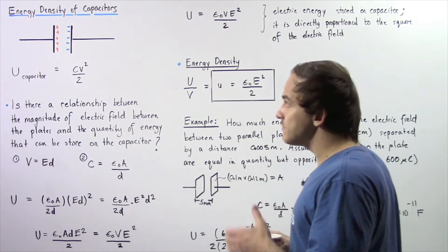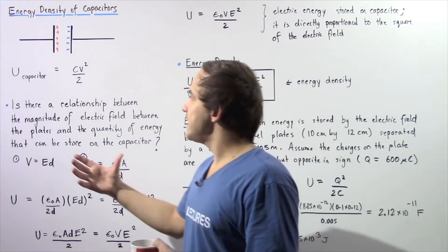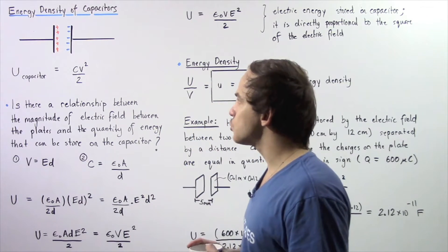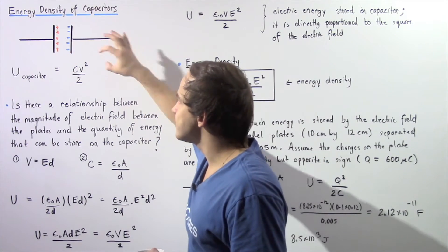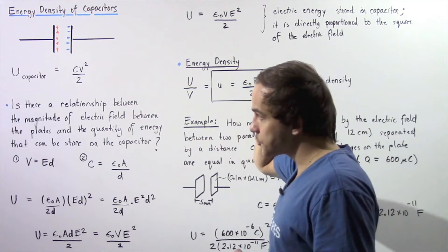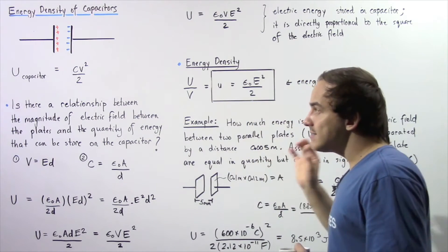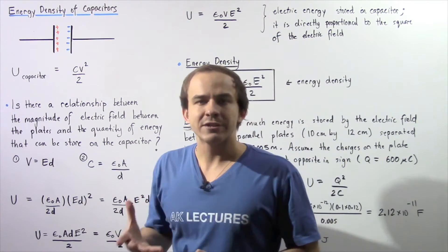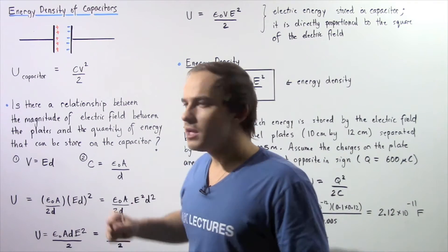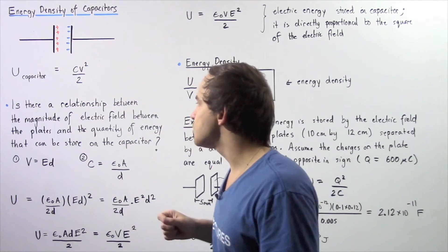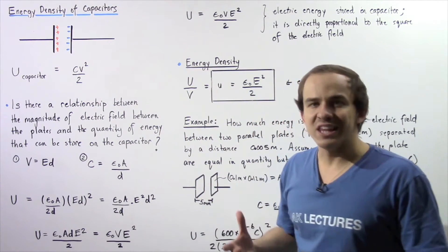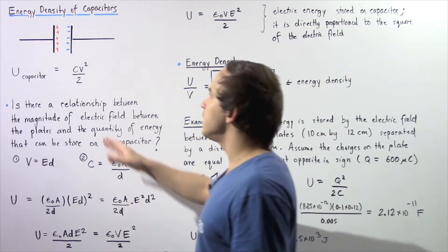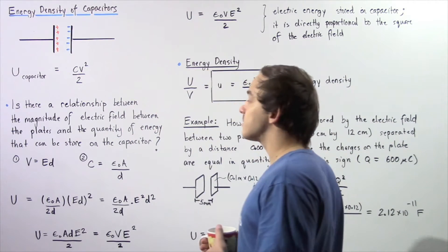This gives us a relationship between our quantity of electric energy stored and the capacitance as well as the voltage. Is there a relationship between the magnitude of the electric field between these two plates and the quantity of electric energy that can be stored on our parallel plate capacitor?